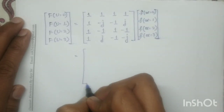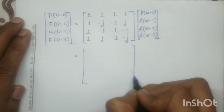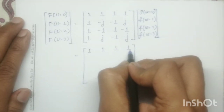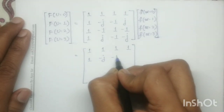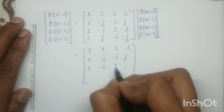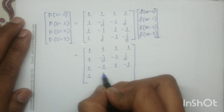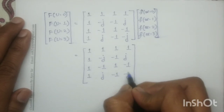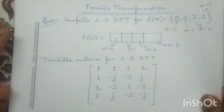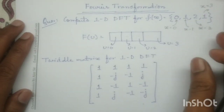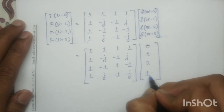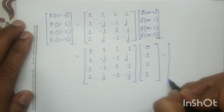First we will substitute these numbers. The twiddle matrix remains: row 1: 1, 1, 1, 1; row 2: 1, -j, -1, j; row 3: 1, -1, 1, -1; row 4: 1, j, -1, -j. The input signal values 0, 1, 2, 1 are substituted into the column vector, and now we will perform the matrix multiplication.